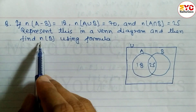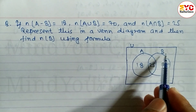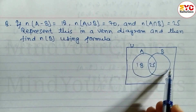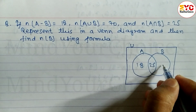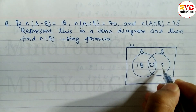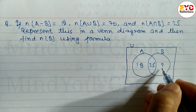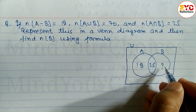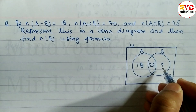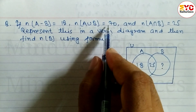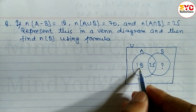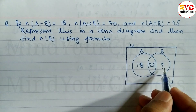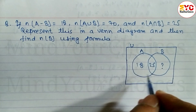After this, we have to find out n(B). n(B) means this whole set. We don't have the only-B value yet, so we write a question mark or X there. Note that 18 plus 25 plus this unknown equals 70.